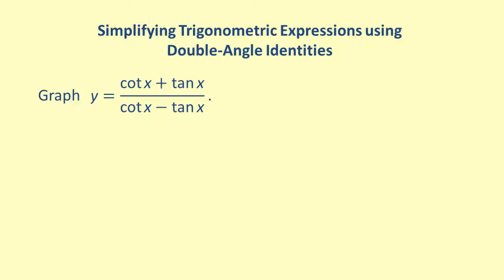To do this, we will need to simplify. The first step is to write the cotangent and tangent functions in terms of sine and cosine. Remember that the cotangent of x equals cosine of x over sine of x and the tangent of x equals sine of x over cosine of x.